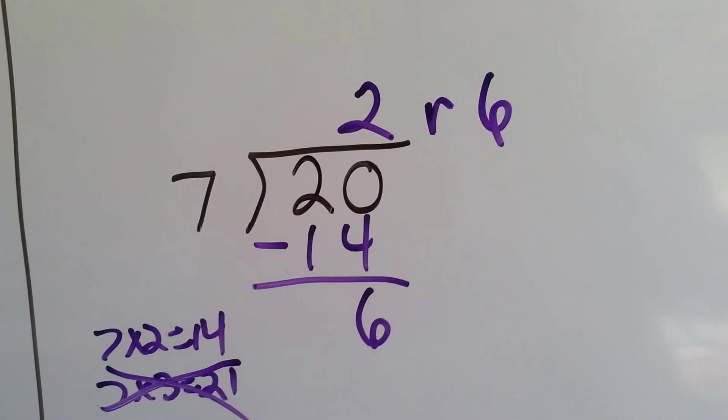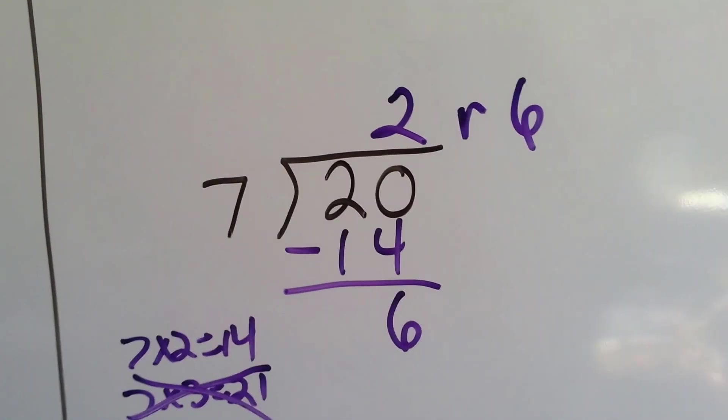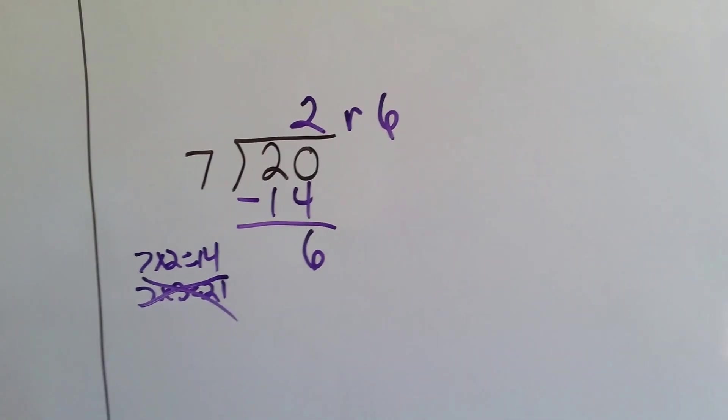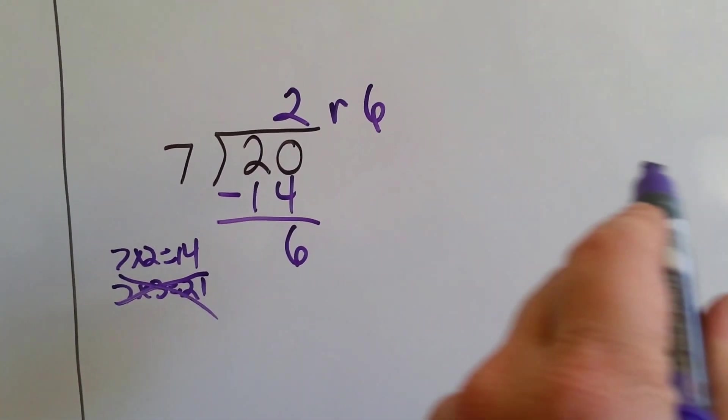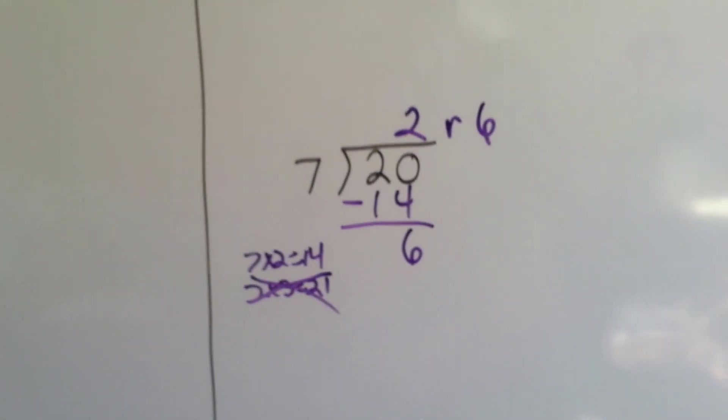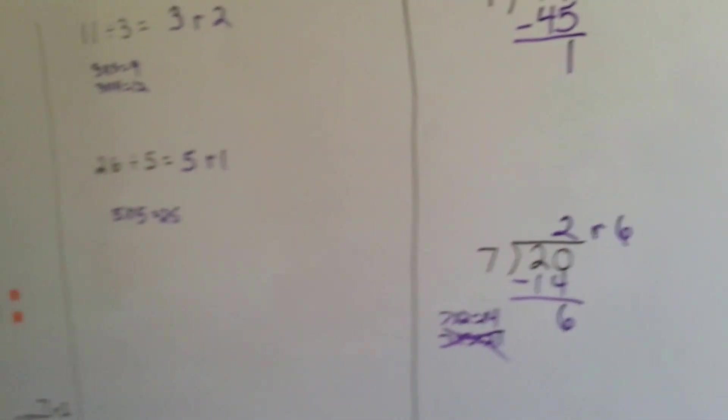It helps to do multiplication on the side. That'll help you do long division every time. Even really big numbers that have like 8 numbers coming across this way. If you do multiplication on the side, it'll help you. So that's what a remainder is.